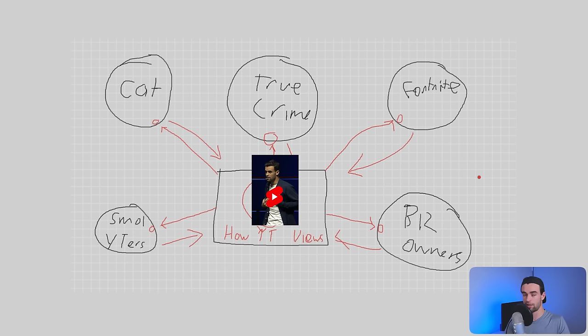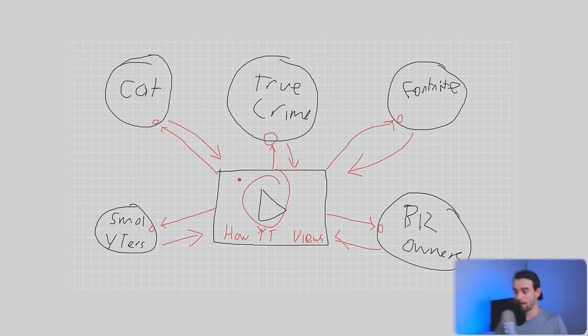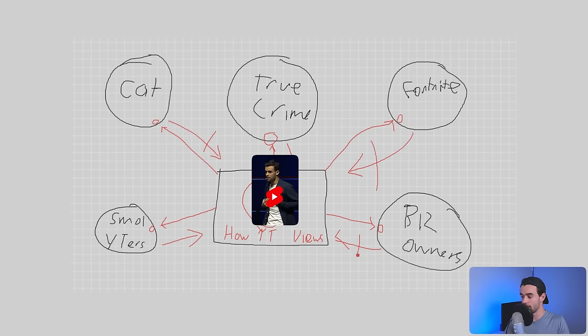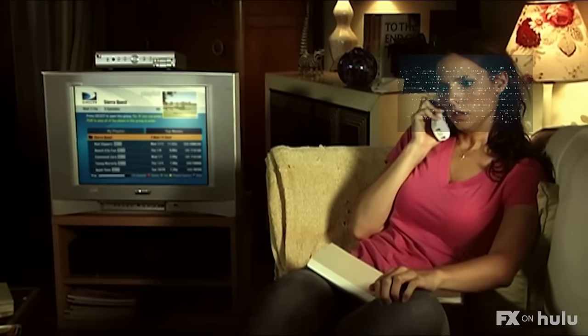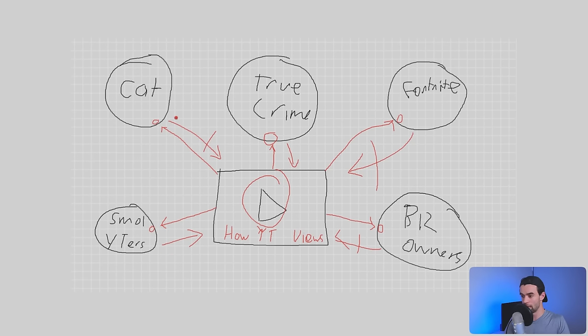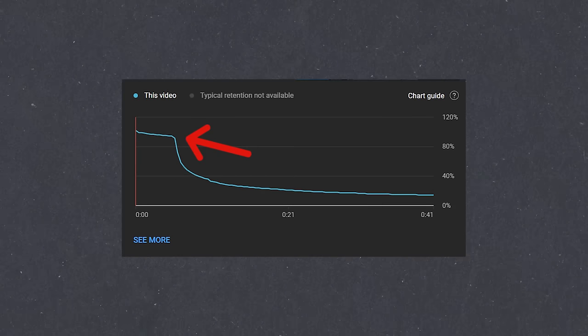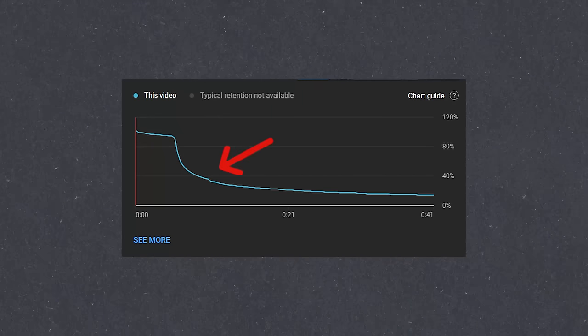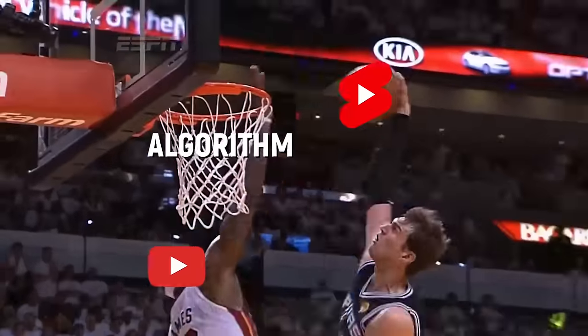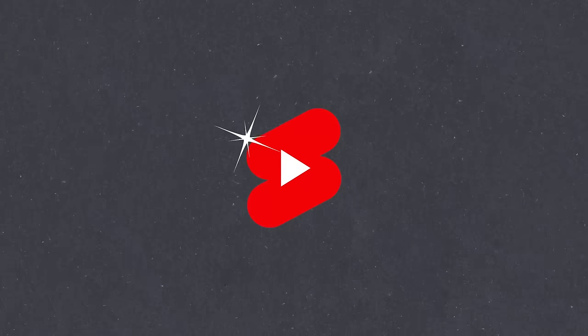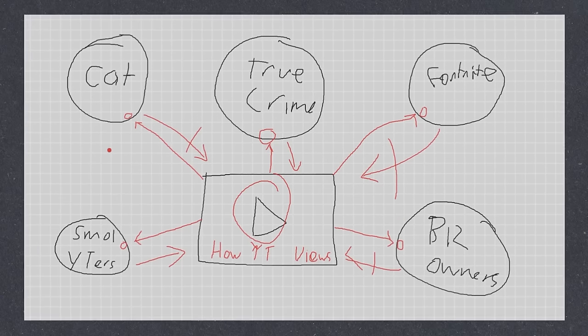The problem is that as soon as our cat lovers, true crime lovers, and Fortnite lovers discover that this is actually a short about how to grow on YouTube — something not relevant to them at all — they're going to leave and swipe away. It's going to kill my retention and send really negative signals to the YouTube algorithm, because the algorithm will think: well, this short seemed relevant to those audiences because they did watch the first bit, but then they left immediately — so maybe it's just bad content and I shouldn't promote it to anyone. Your shorts have to be decent quality regardless, but if you have decent shorts and they're not getting views, this is the mistake you're probably falling into.